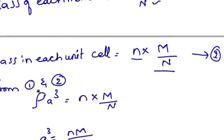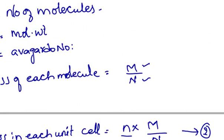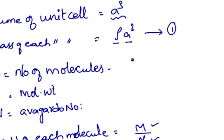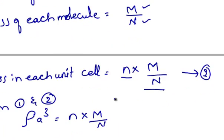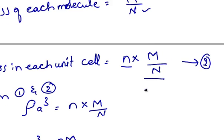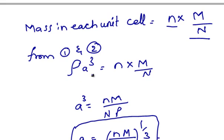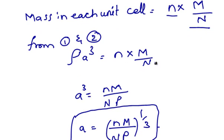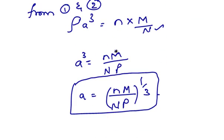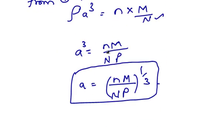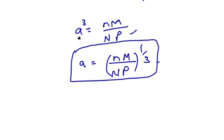So from equations 1 and 2, we have mass of each unit cell is rho A cube and mass of each unit cell calculated is n into capital M by capital N. So we can equate equations 1 and 2. That is rho A cube is equal to n into capital M by capital N. We can rewrite this equation as A cube is equal to n into capital M by N into rho. So from this equation we can get the lattice constant A as A is equal to small n into m by N into rho whole power 1 by 3.